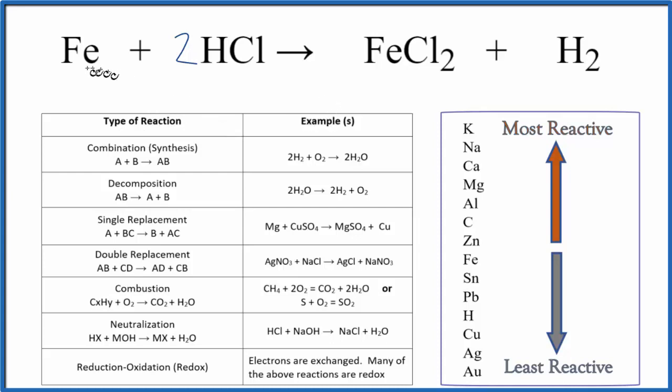Let's look at what happens. We have the iron right here by itself, but over on the product side, the iron's bonded to the chlorine. And the hydrogen, we have the hydrogen here bonded to the chlorine. We have two hydrochloric acid molecules. But the hydrogen over here, it's by itself.